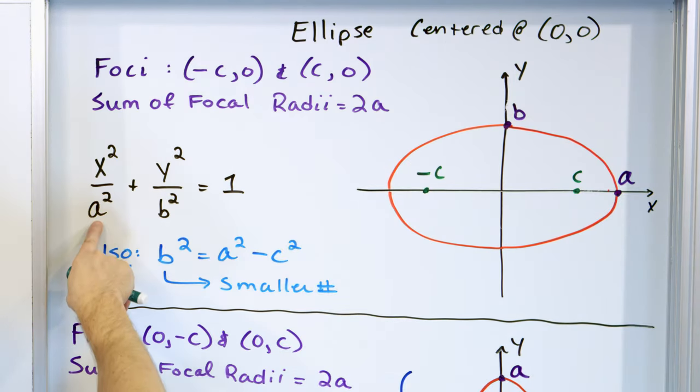If you rotate the ellipse so it's vertically oriented, you have the same form: x squared over something squared plus y squared over something squared equals 1. The focus always goes along the long direction of the ellipse. The number underneath the x variable is where it crosses on the x-axis; the number under y — you take the square root — is where it crosses on the y-axis. We have a long axis called the major axis and a short axis called the minor axis.